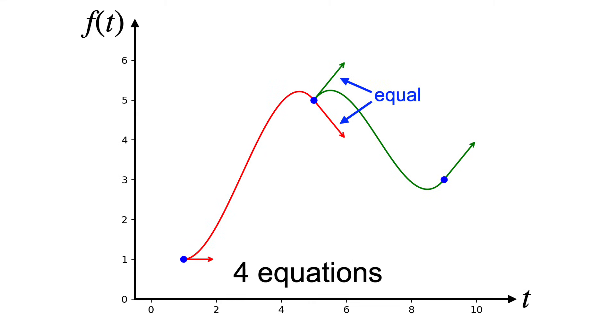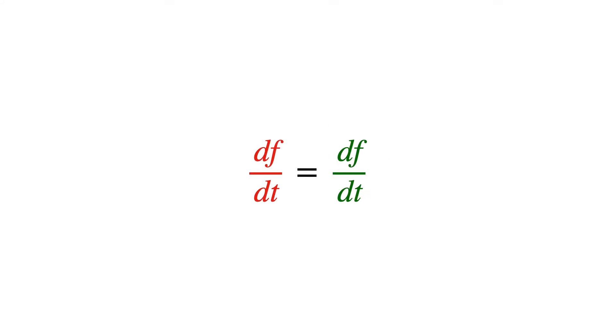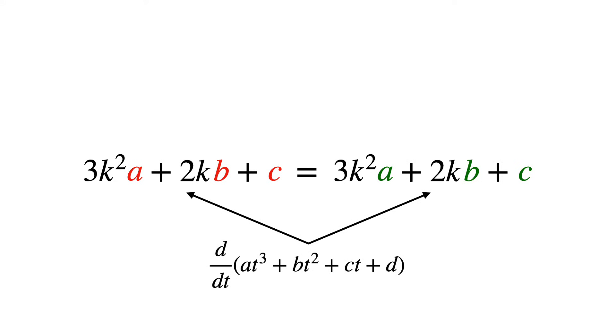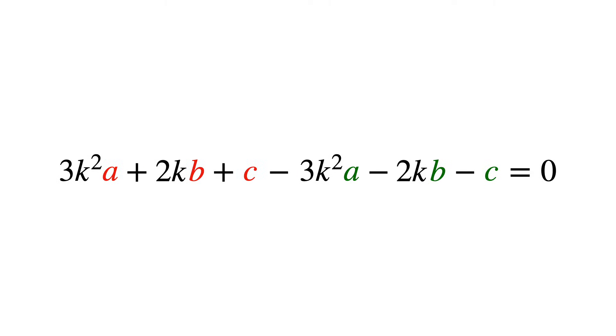We also need the tangents at the knot to be equal. This means the derivatives are equal, which defines this equation. You recognize the left and right sides as the derivatives of the cubic equation evaluated at the knot k. We'll rearrange it in this form, and this gives us five out of our eight equations.